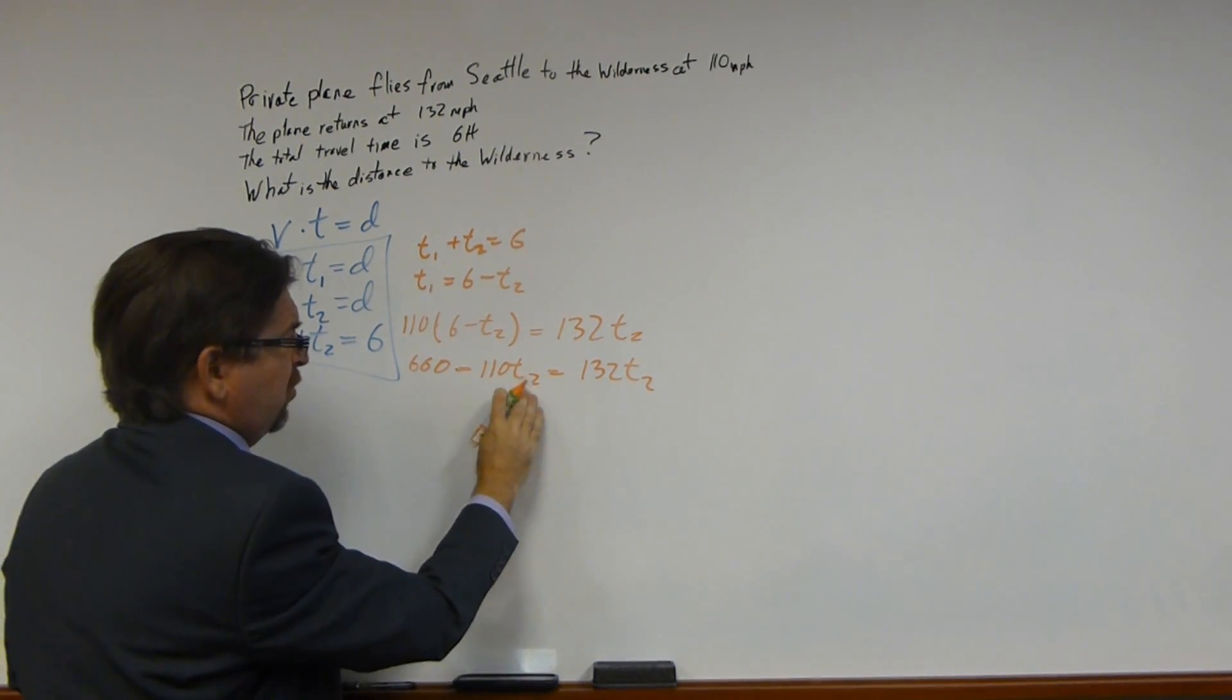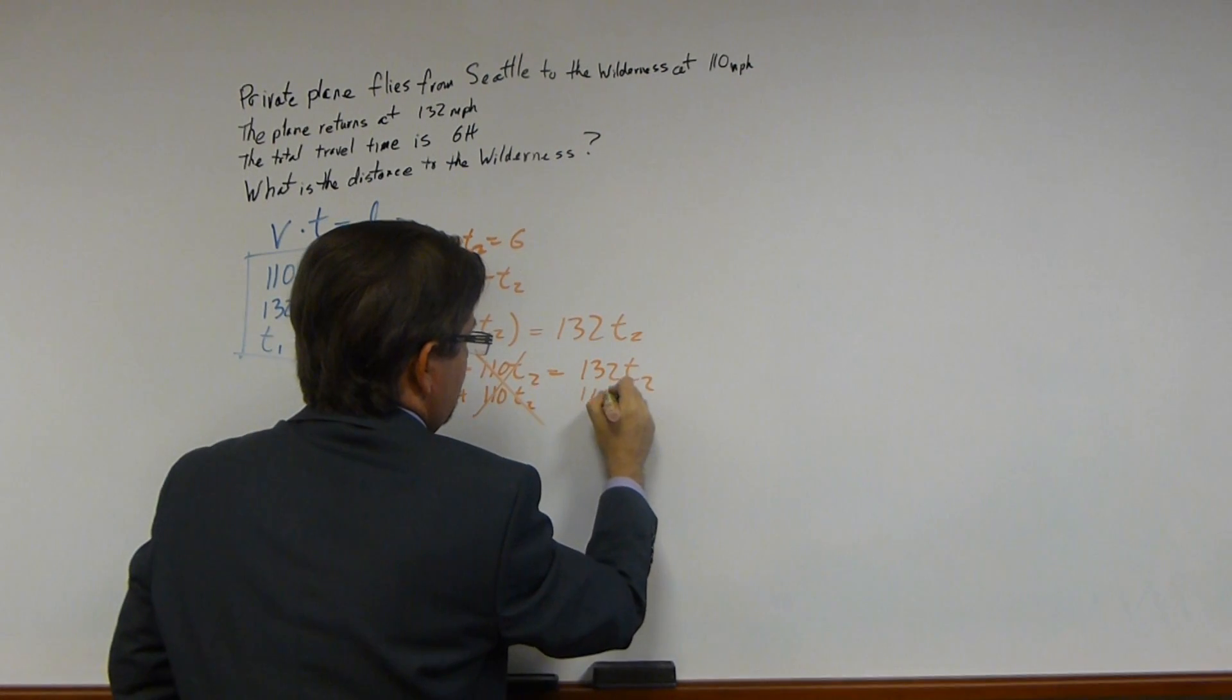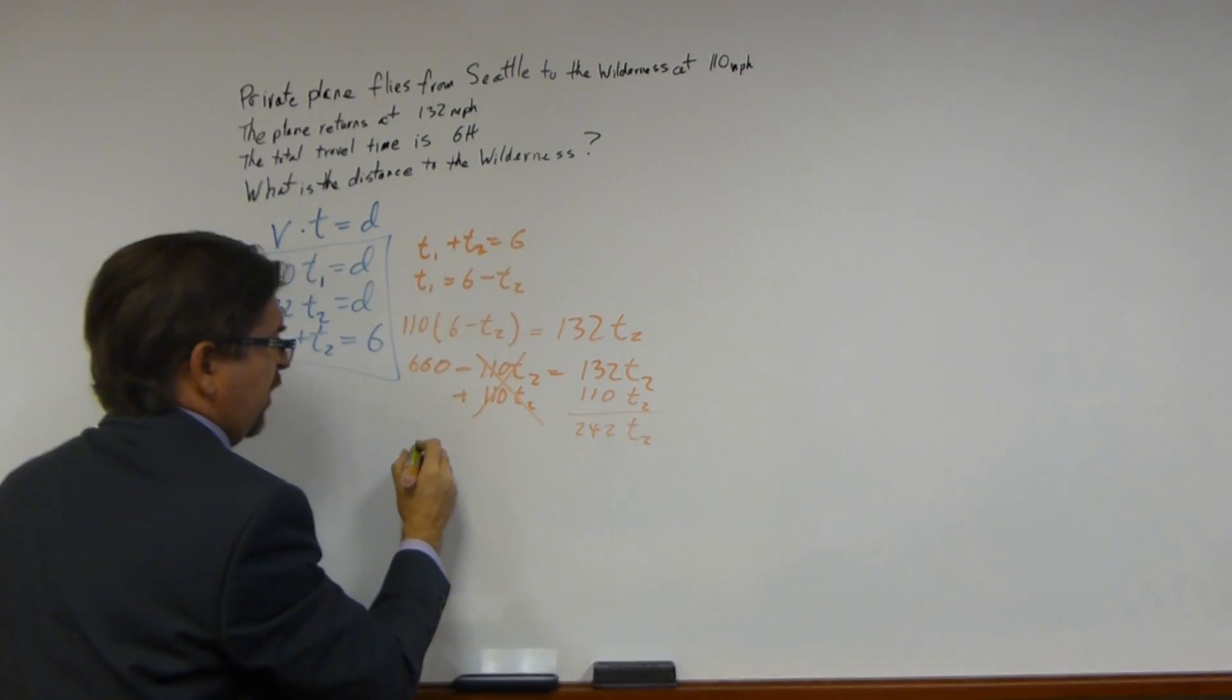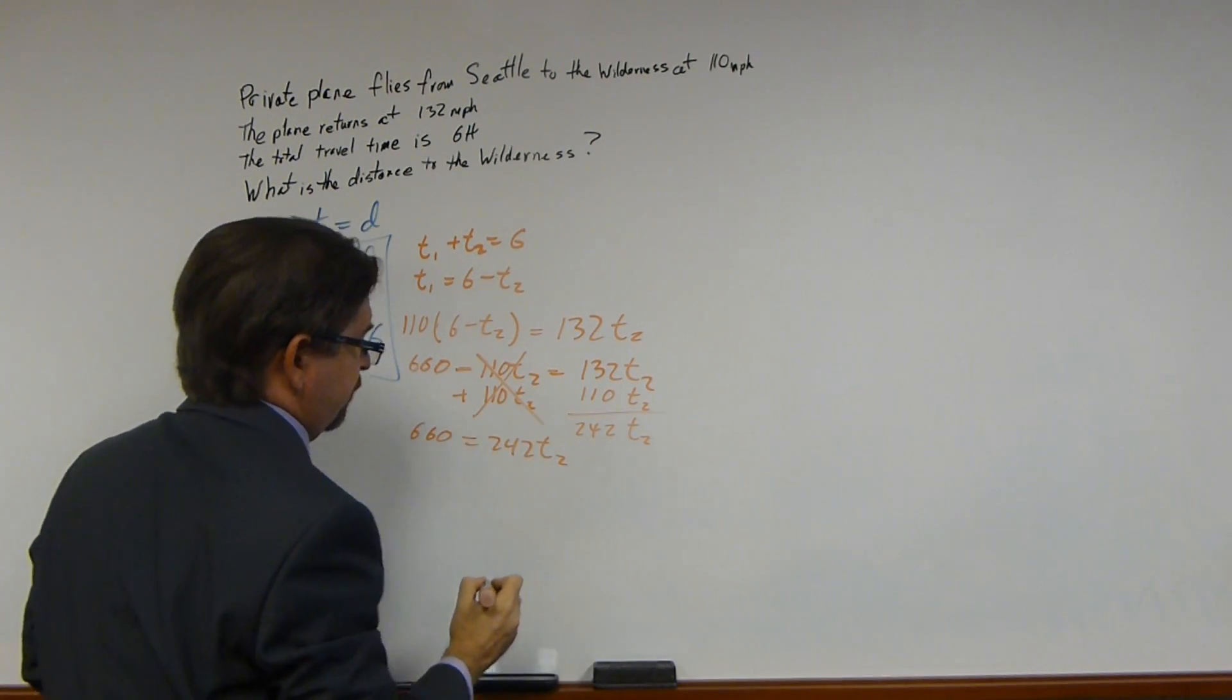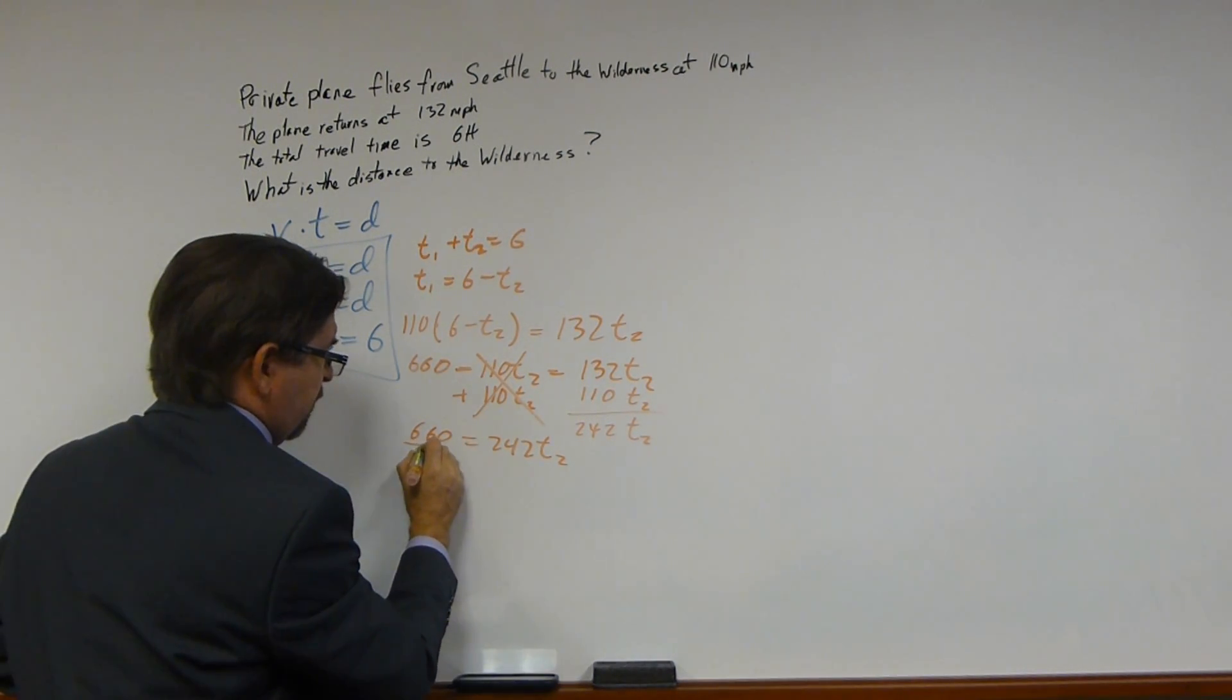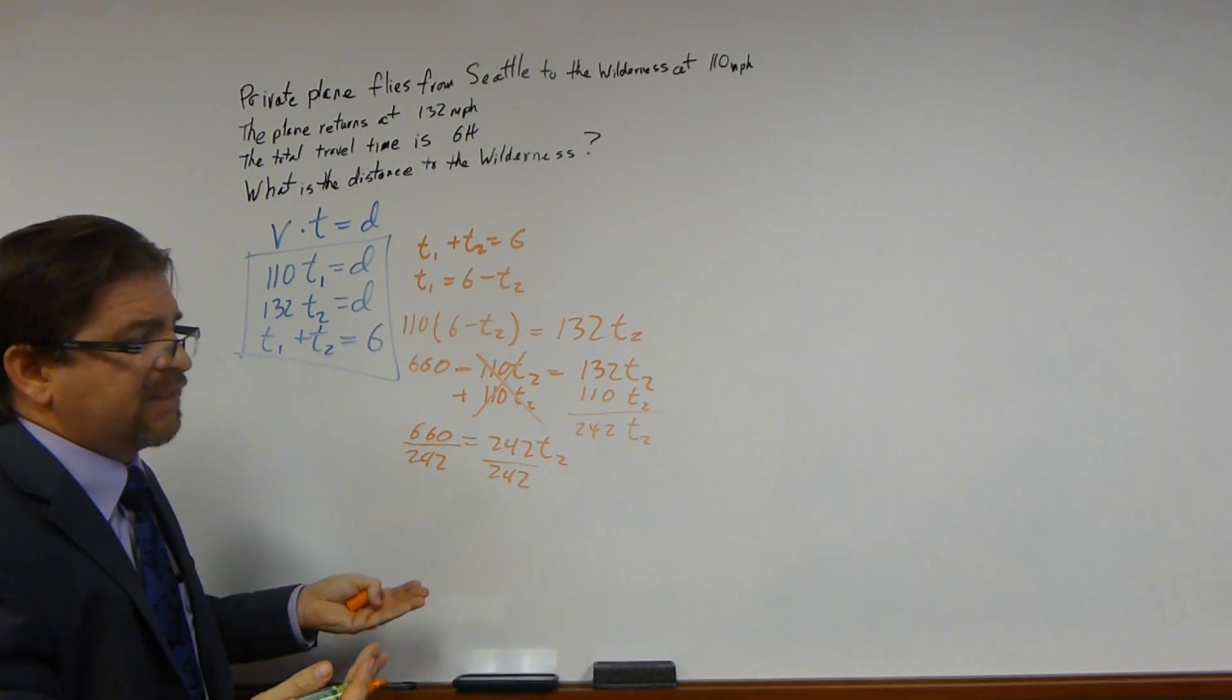Let's add 110 T2 to both sides. Cancel that out. We get 242 T2. So we now have 660 equals 242 T2. We've got a division problem right here. Divide both sides by 242. 242 divided by 242, we all know that. Any number divided by itself is 1.